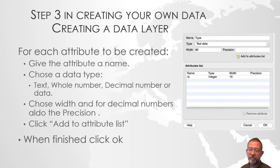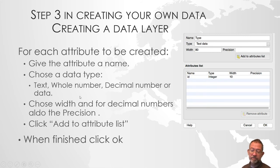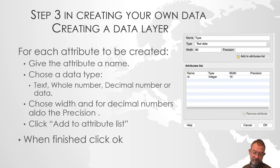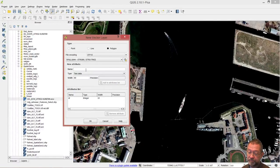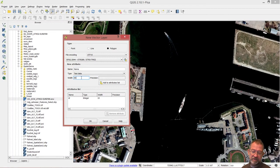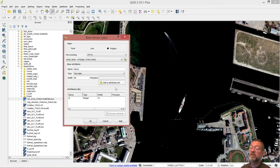In the next part of the dialog box, we are able to create the attributes we need. For each attribute, we give it a name, choose a data type, and set the width. If it's a decimal number, we also give it its precision. So the process is: go in and give it a name. I'll give it the name 'yacht' — a text field, 80 characters wide. I don't think any of those boats have names longer than 80 characters, so I'll click Add.